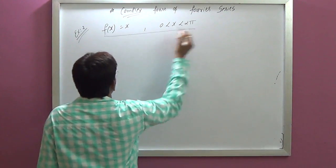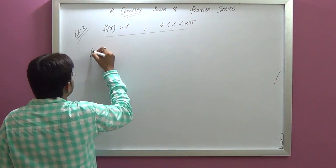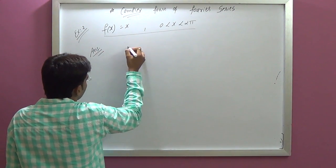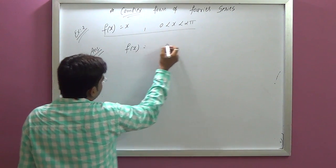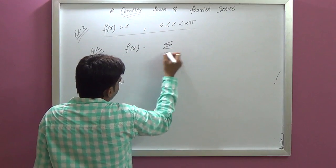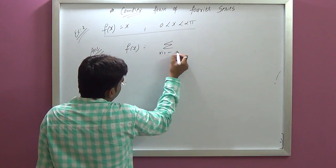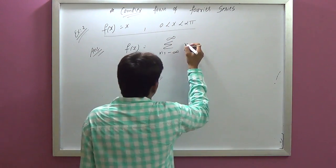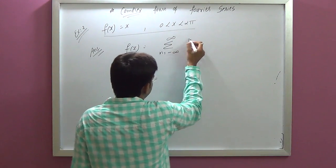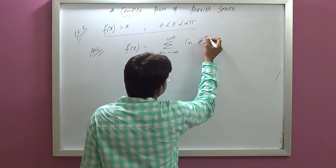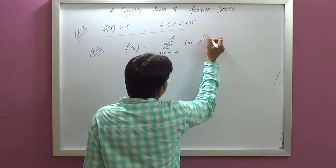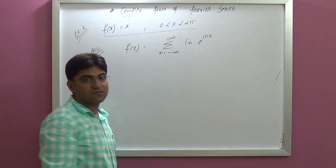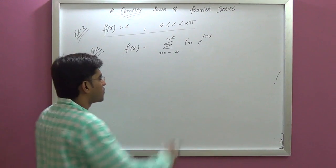First of all, we have the general formula. So we have f of x equals summation from n equals negative infinity to infinity of Cₙ times e raised to inx. This is our complex Fourier series formula.